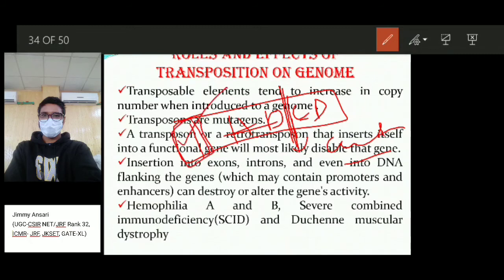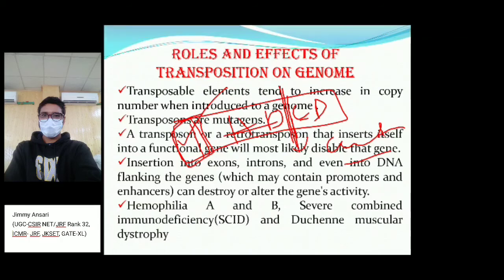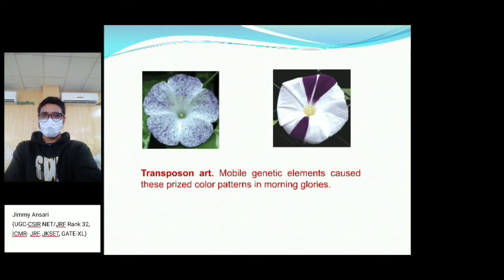If the insertion occurs in the promoter or enhancer region, it will increase or decrease the activity of that gene. Examples of diseases caused by retrotransposition include hemophilia A and B, severe combined immunodeficiency (SCID), and Duchenne muscular dystrophy.